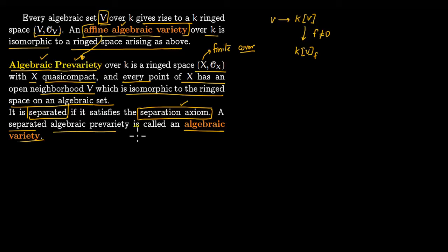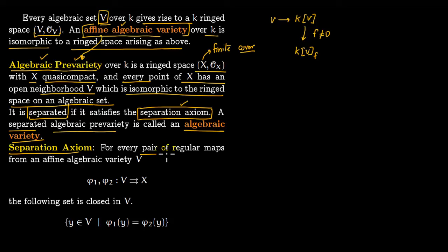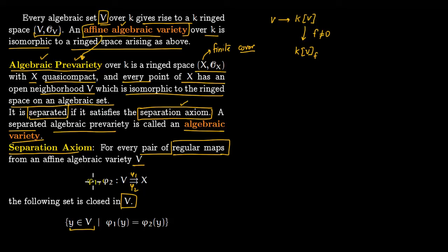The separation axiom states: for every pair of regular maps — which are polynomials or rational functions — from an affine algebraic variety into X, if the two maps agree on some set V, then the set on which they agree is closed in V. This is a diagonal argument: the two maps acting on a set and taking it to the diagonal — in the sense that both agree — means the set from which they came is closed. If this condition is satisfied, we have an algebraic variety.